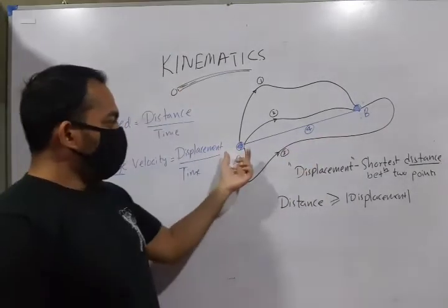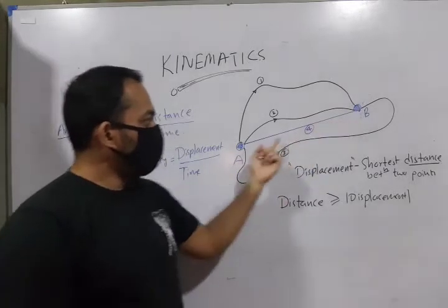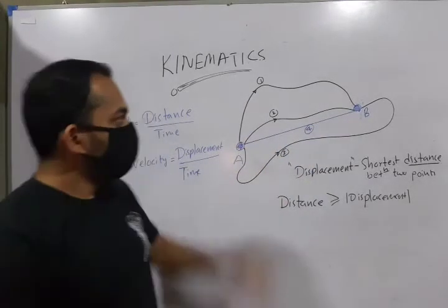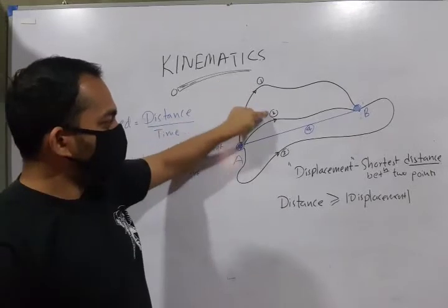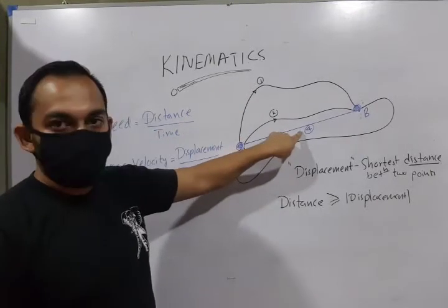You know, to get from A to B, you see that there are four paths available. First path, second path, third path, and fourth path.